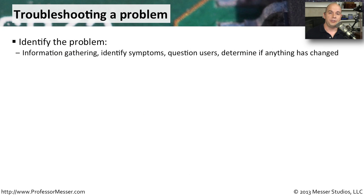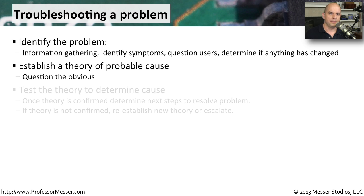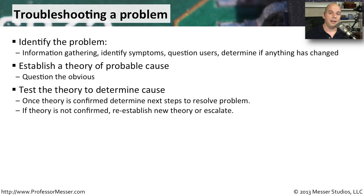You can't solve a problem unless you know what's going on, so the first step is to identify the problem. This is where you're going to be doing a lot of information gathering, really documenting and determining exactly what the problem happens to be. After you've gathered this intel, you can start thinking about what could possibly have caused this particular problem and come up with a few ideas. You won't know if your theories are correct unless you test them. If your theory doesn't work, you go back to the drawing board and test another one.